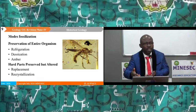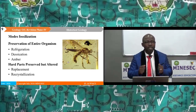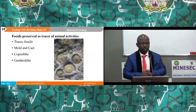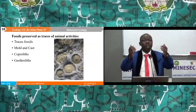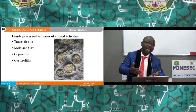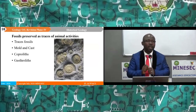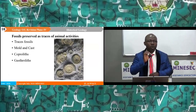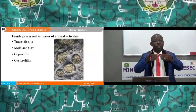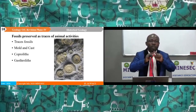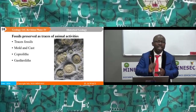Another mode of preservation is the hard part preserved without alteration, done through the process of replacement and recrystallization. Fossils can also be preserved as trace fossils — the remains of organisms that lived in a particular environment are buried, and when we come after years to study, we may see these traces. These traces exist as molds and casts, copper leaf, and cast-through leaf. The trace of an organism in soft mud enables us to determine the particular organism that lived in that environment.